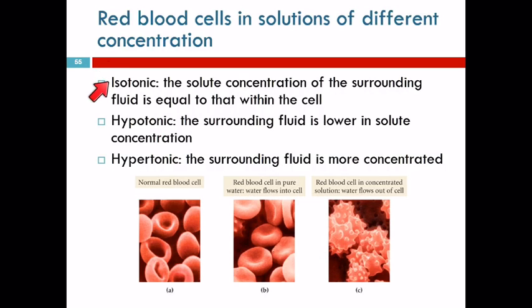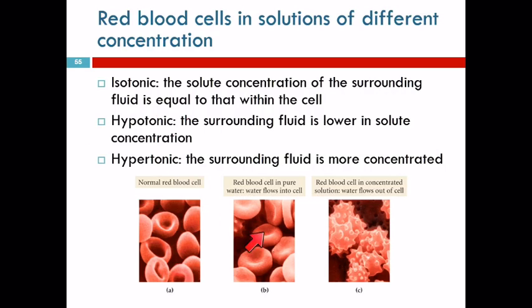Isotonic is the word for a solution that has the same solute concentration as what is found inside the cell. If you're getting an IV fluid, you want that fluid to be isotonic so it won't cause your red blood cells to inflate and burst or to shrivel up. Hypotonic means lower concentration — hypo means low — and it'll cause things to swell up. Hypertonic means it has more dissolved solutes and will cause crenation.